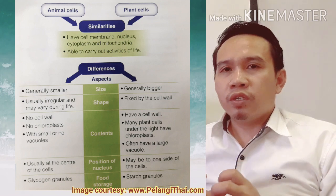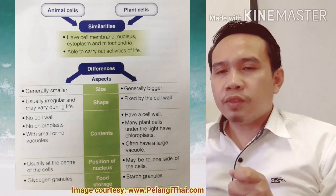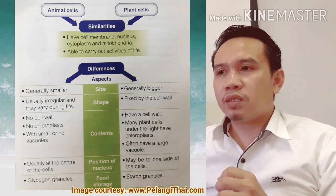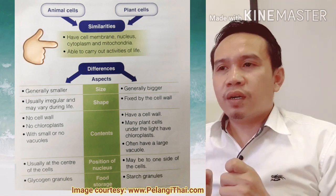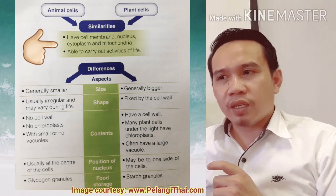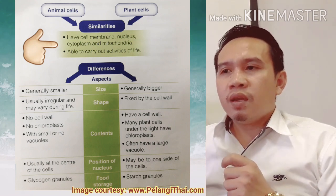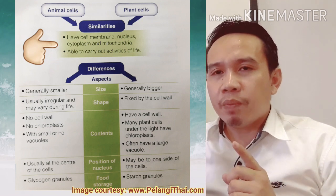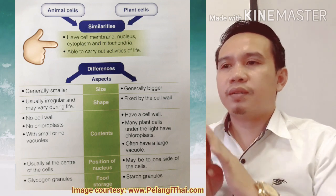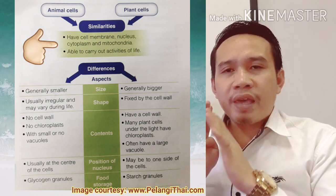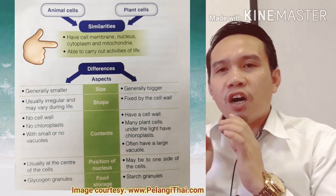Now let's move to the comparison between animal cells and plant cells. Look at the chart that shows the similarities and differences between them. Here are the similarities: animal and plant cells both have a cell membrane, nucleus, cytoplasm, and mitochondria. Both animal and plant cells are able to carry out the activities of life.